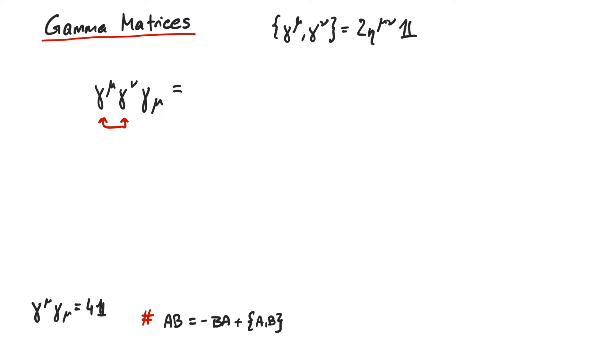So this means we can write this as minus gamma nu, gamma mu, and then this gamma mu, and then we have to add the anticommutator. So plus the anticommutator of gamma mu, gamma nu, and the other gamma mu.